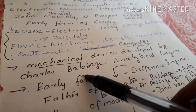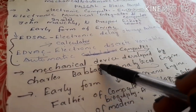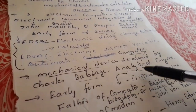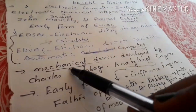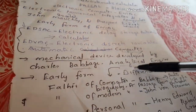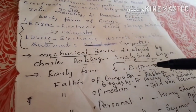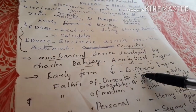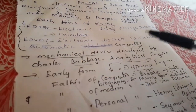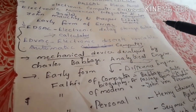A mechanical device developed by Charles Babbage is called the Analytical Engine. The Analytical Engine is a mechanical device developed by Charles Babbage. The early form of the Analytical Engine is called the Difference Engine.